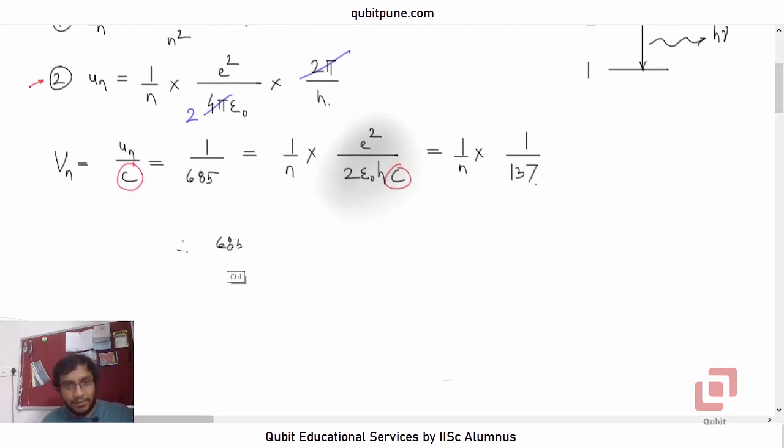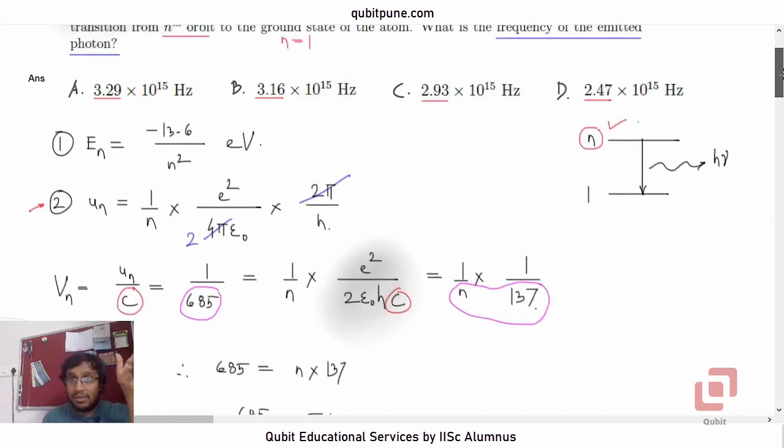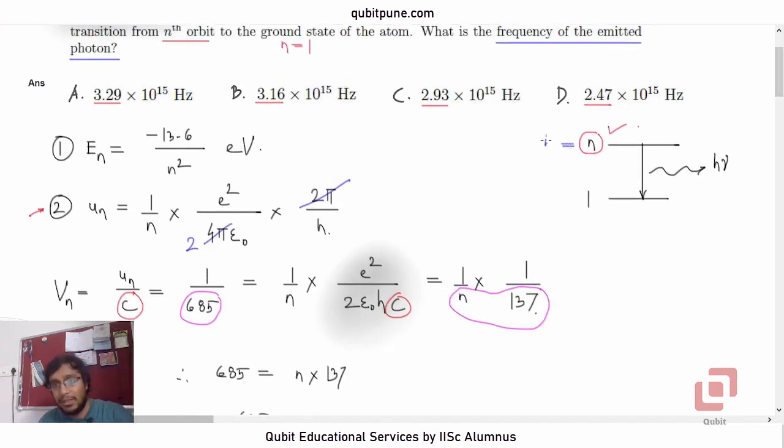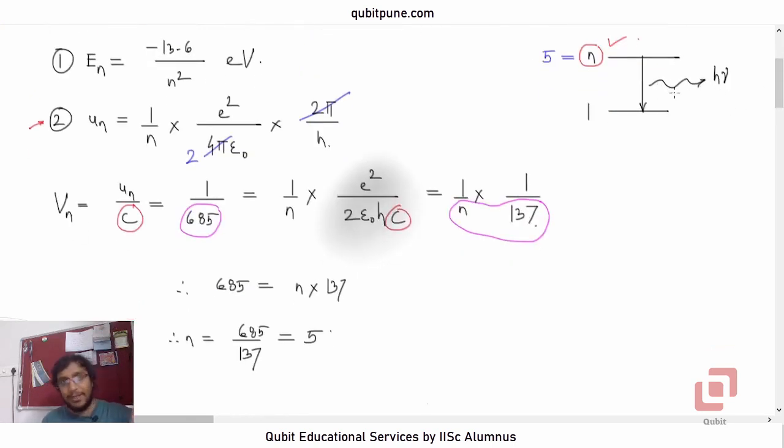Therefore, 685 must be equal to n into 137. So n must be the division of 685 by 137, and if you do it, it will be 5. You can check it: 137 into 5, 35 carry over 3, 13 into 5 is 65 plus 3 is 68. Which means this electron is jumping from the fifth orbit to the first orbit. So that is a very simple calculation provided you know the formula.